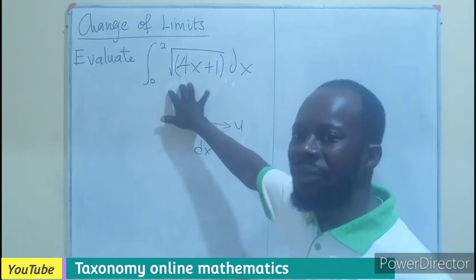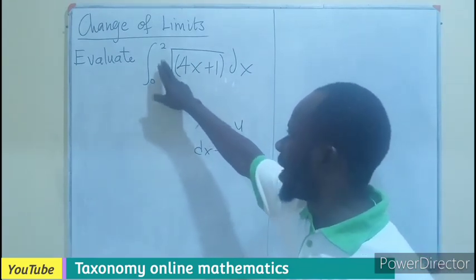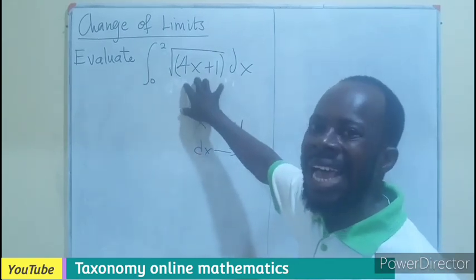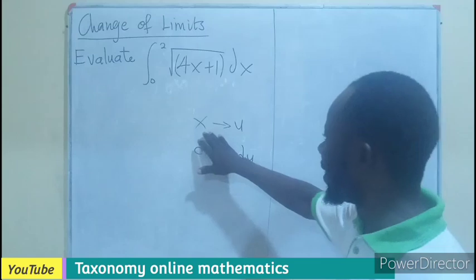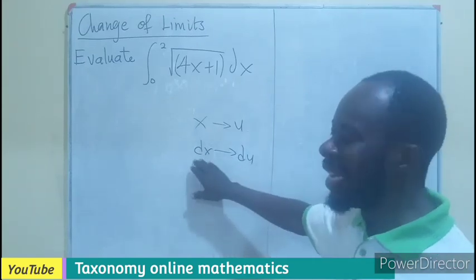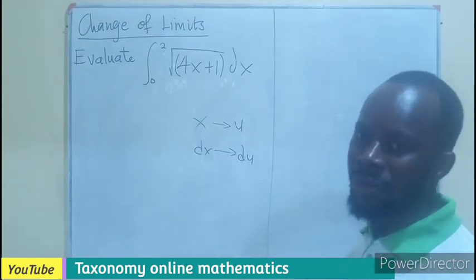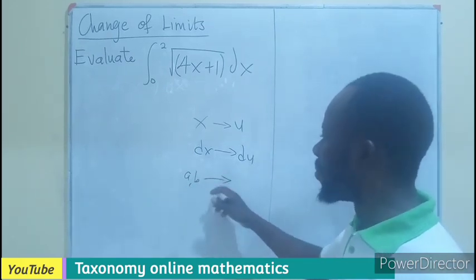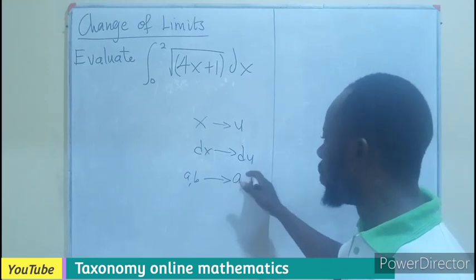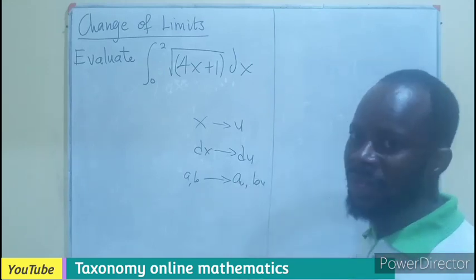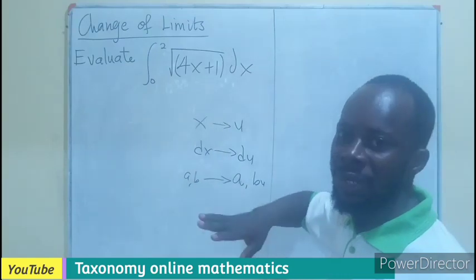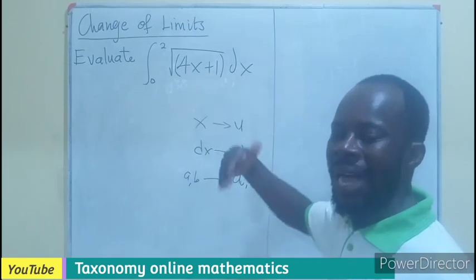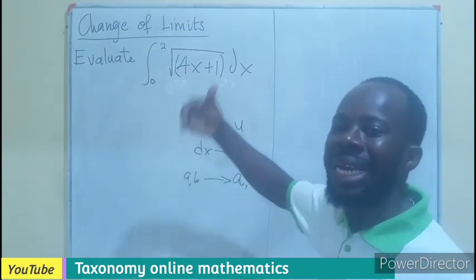But if you are doing definite integral, you can see that the bound or the limit of integration is based on X function. So, the moment we change the X to become U, the DX to become DU, it means our bound, which is the limit, the limit of A and B must also be changed to let's say AU and BU. That is where the change of limit comes in. So, the moment I am changing the variable from X to U, then I should be prepared to change the limit also.